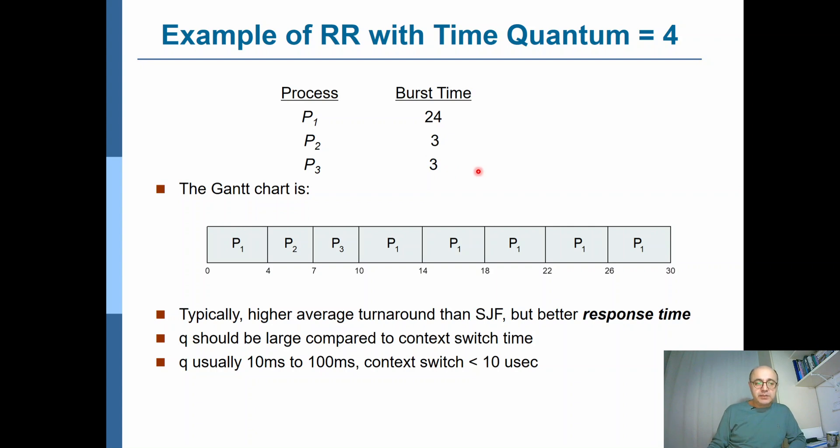If you draw the chart, since the time quantum q is four, the first process P1 gets to go to the CPU not for 24 milliseconds, but only for four milliseconds. Then it switches to P2 and gives P2 a time quantum of four milliseconds. However, P2's burst length is only three, so although it's given the CPU for four milliseconds, it completes in three milliseconds. We immediately do a context switch to the next process, P3. P3 also uses only three milliseconds, then we return to P1 for four milliseconds. P1 continues for another four milliseconds, for another, until it completes.